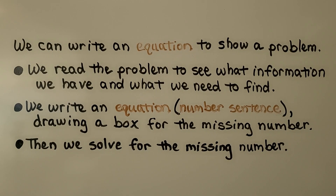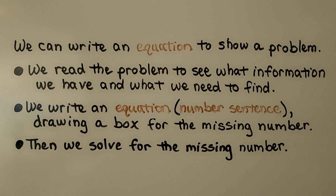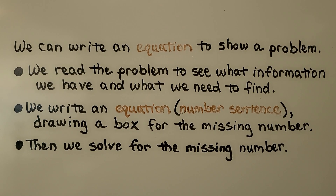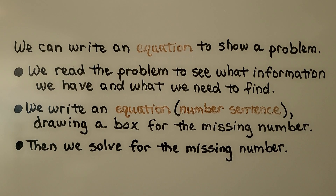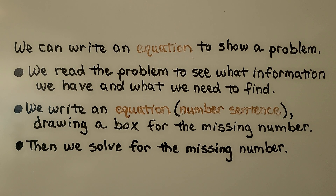We can write an equation to show a problem. We read the problem to see what information we have and what we need to find. We write an equation — that's a number sentence — drawing a box for the missing number. Then we solve for the missing number.